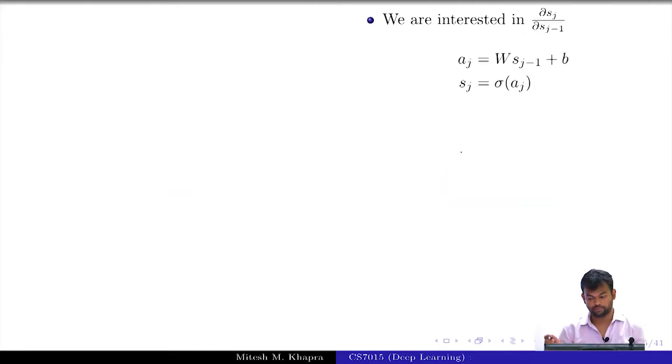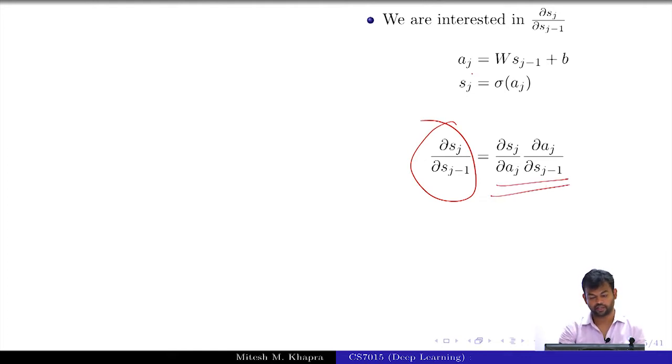Let us see what this derivative is and remember that in the final formula, we have a product of these quantities. So, I am looking at one such term in my final product. Just to jog your memory, a_j is the pre-activation which is given by this and then s_j is the hidden representation after activation after the non-linearity. So, let me just write it down as ∂s_j/∂s_{j-1} can be written as this chain rule which is first compute ∂s_j/∂a_j and then ∂a_j/∂s_{j-1}.